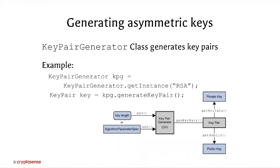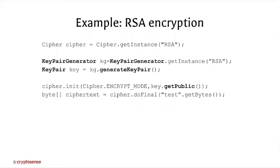Generating asymmetric keys is similar, except we need to generate pairs of keys. Key one is a public key I can give to anyone, and key two is a private key for decryption that I must keep secure. We can use a key pair generator for RSA — the most widely used asymmetric key system — to generate a key pair. For RSA encryption, instead of a key generator we use a key pair generator, and when doing the encryption we call getPublic() to retrieve the public part of the key.